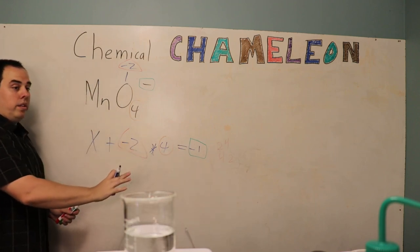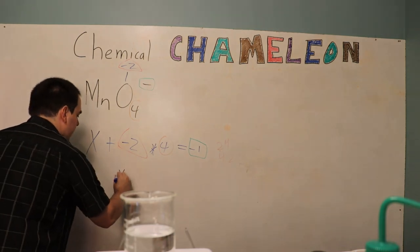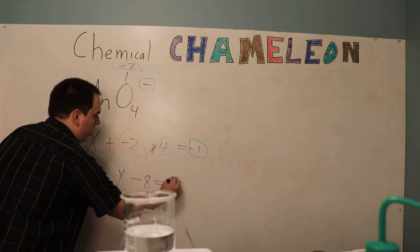So now we can take this algebraic equation and solve for x. So we'll do x plus negative 2 times 4 which gives us a negative 8 is equal to negative 1.